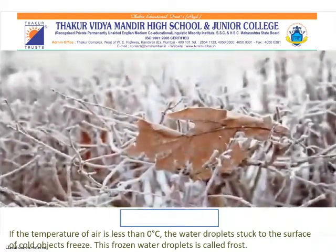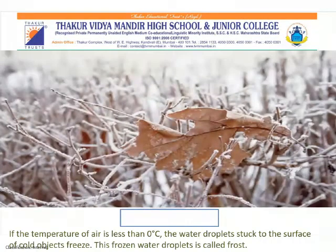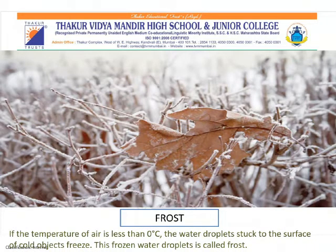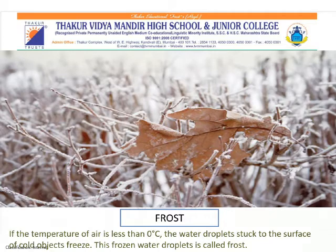The next form of condensation is frost. If the temperature of the air is less than zero degrees, water droplets stick to the surface of cold objects and freeze. These frozen water droplets are called frost. Dew and frost occur on a large scale in winters.